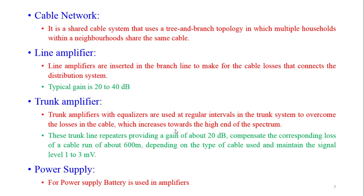Trunk amplifier: Trunk amplifiers with equalizers are used at regular intervals in the trunk system to overcome losses in the cable, which increase towards the high end of the spectrum. These trunk line repeaters provide a gain of about 20 dB and compensate for losses over approximately 600 meters of cable, depending on the cable type. They are used to maintain the signal level at 1 to 3 millivolts. A battery power supply is used to operate these trunk and line amplifiers.